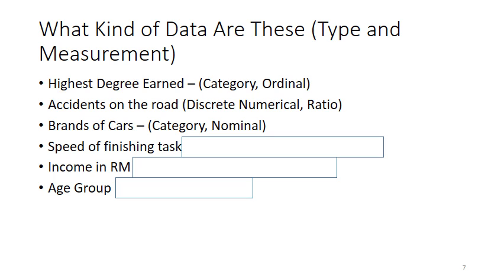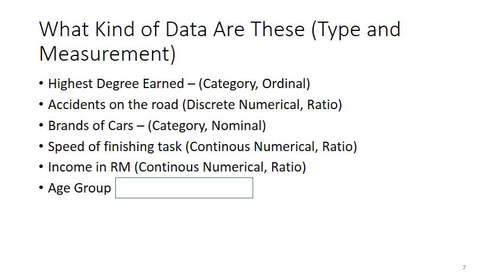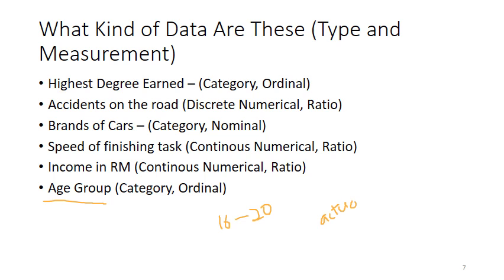Speed of finishing a task, this is a measured variable, so you use a timer to measure, so it becomes a continuous numerical, and there is a fixed zero point, so it becomes ratio. Income group also is continuous numerical with a fixed zero point. Age group is a category, ordinal. The reason why age group is category is because you are grouping ages into groups, and we are not actually asking the person's actual age. If we are asking the person's actual age, then we are basically saying that that would be a continuous numerical ratio data.